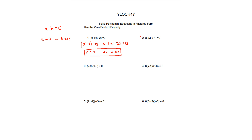Number 2 is the same thing, just with different numbers. Using the zero product property, we know that it's either x minus 5 equals 0 or x minus 1 equals 0. We isolate the x on both of these, so it becomes x equals 5 and x equals 1 as our answer.